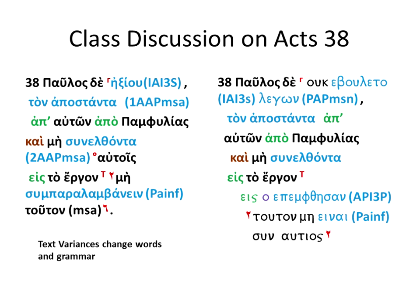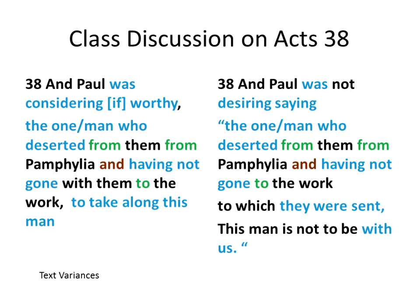What does that look like if you translate this all to English? The original text: 'Paul was considering, if worthy, the one man who deserted from them, from Pamphylia, and not having gone with them to work, to take along this man.' Notice the parenthetical — Paul was considering if worthy. The opposite literal translation: 'Paul was not desiring, saying, this man who deserted from them, from Pamphylia, and not having gone to the work to which they were sent — this man is not to be with us.' You can see that one has a much more parenthetical structure in English, while in Greek it's working differently.